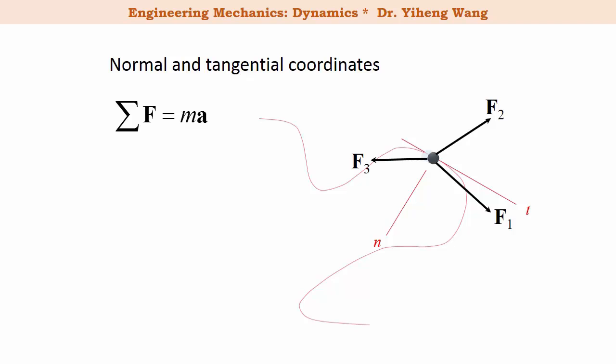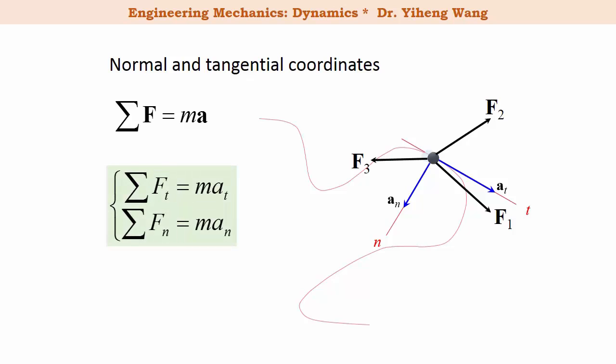Represented using normal and tangential coordinates, there are only two acceleration components: a_t along the tangential direction and a_n along the normal direction. Therefore, the vector equation of Newton's second law becomes two scalar equations — the resultant force along the tangential direction equals m·a_t, and the resultant force along the normal direction equals m·a_n.